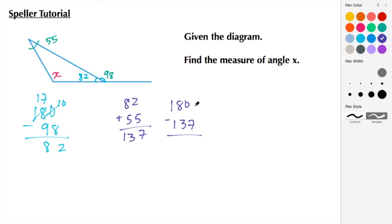So we're going to regroup so that's 17, this here becomes 10. 10 minus 7 is 3, and 17 minus 13 is 4. So here we see that the measure of angle X is 43 degrees.